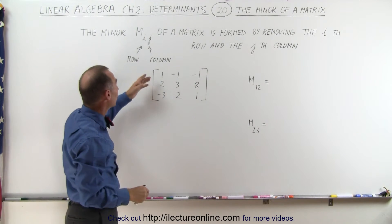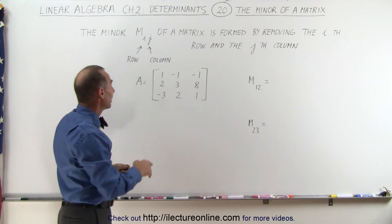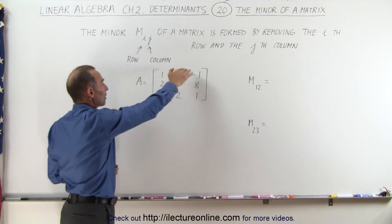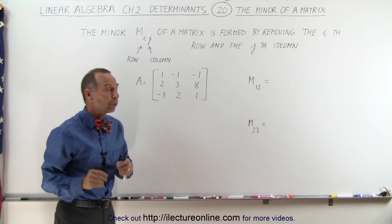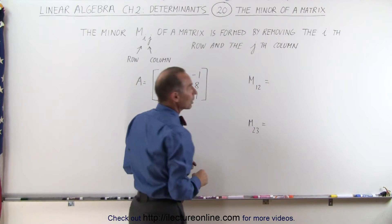So whatever the I is you remove that row and whatever the J is you remove that column. Here we have a matrix A that's a three by three matrix and what we're going to do is find the minor M_12 and the minor M_23.